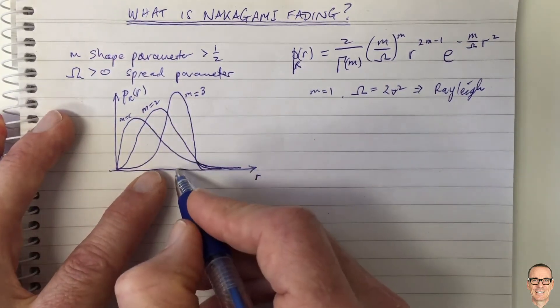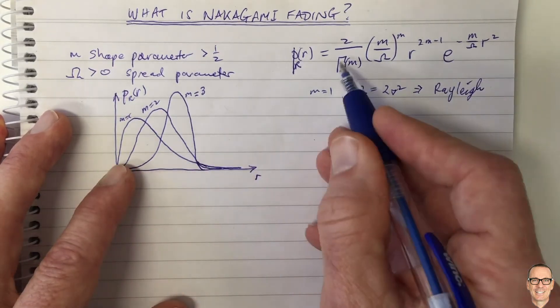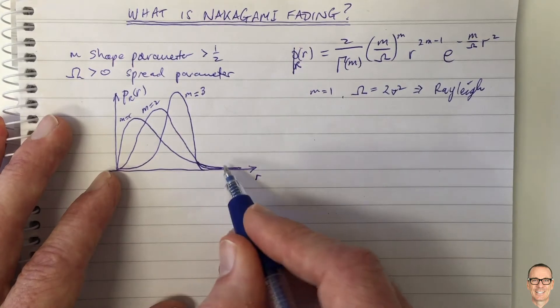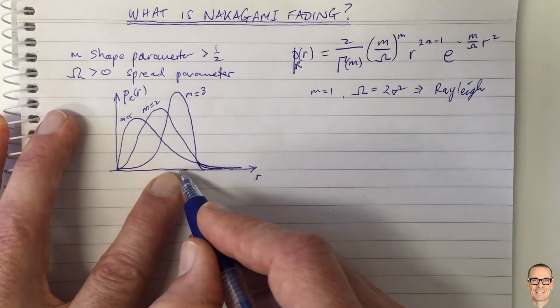So what it says is as you increase M for the Nakagami parameter here, for the Nakagami distribution, you're going to move away from the Rayleigh case to more of a case where, like Ricean, there's a direct line of sight.